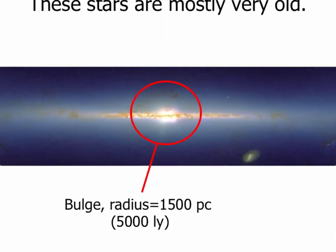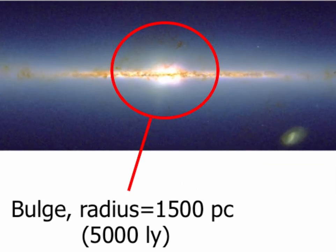That little puffy part near the center of the galaxy that we can see from the side is called the galactic bulge. The bulge is a conglomeration of very old stars that surrounds the galactic center. It's about 5,000 light years in radius — so it's big, but given that it's 26,000 light years away, we're well outside it here at the Sun.